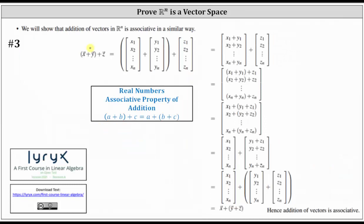Number three: we show that addition of vectors in Rn is associative. We begin with (vector x + vector y) + vector z, determine the sum inside the parentheses, then find the sum of the two resulting column matrices. Once inside one column matrix, we use the associative property of addition for real numbers to change grouping from around the x and y components to around the y and z components. We then break it into a sum showing (x + y) + z = x + (y + z). Hence addition in Rn is associative.